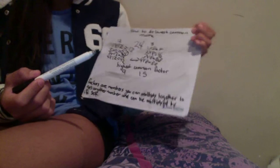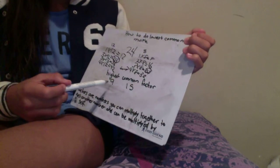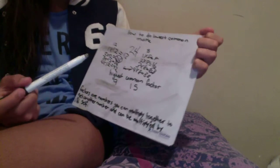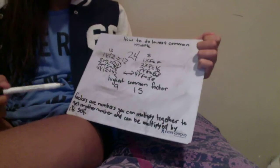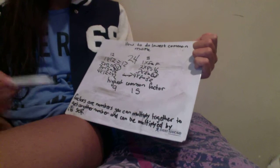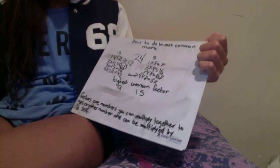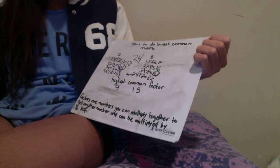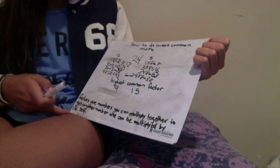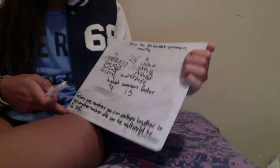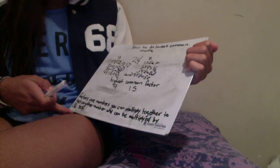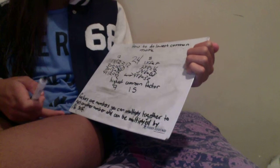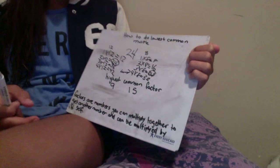So now with highest common factors, our numbers are 9 and 15. Down here, factors are numbers you can multiply together to get another number, and a number can be multiplied by itself.